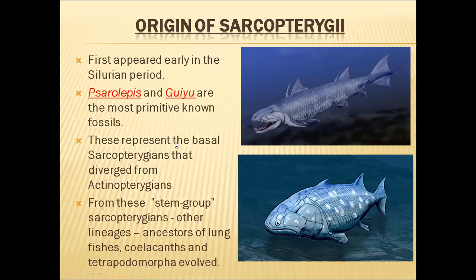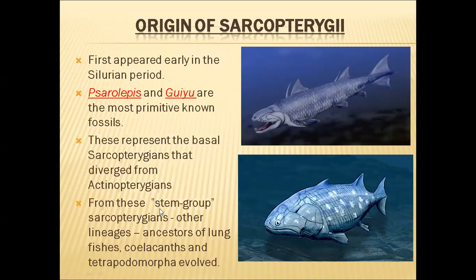Sarcopterygii developed as a divergence from the Actinopterygii. Some ancestral Actinopterygii fishes underwent changes — developing fleshy fins and other very important modifications that identify Sarcopterygii. Due to the development of these modifications, some ancestral Actinopterygii fishes became the basal stock or ancestors of Sarcopterygii. Out of those primitive Sarcopterygii, the Psarolepis and Guiyu fossils have been collected by scientists. From these stem groups of Sarcopterygii — like Psarolepis and Guiyu — other lineages including ancestors of lungfishes, Coelacanths, and Tetrapodomorphs evolved.